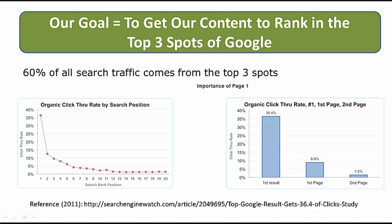When talking about ranking, you want to get in the top three spots of Google because that's where all the traffic comes from. Roughly 60 percent of your traffic comes from the top three spots. Research from 2011 shows that 36.4 percent of click-throughs came from the first ranking, with a sudden drop-off at the second and third. Ideally you want the first ranking, but within the top three are the ideal spots.